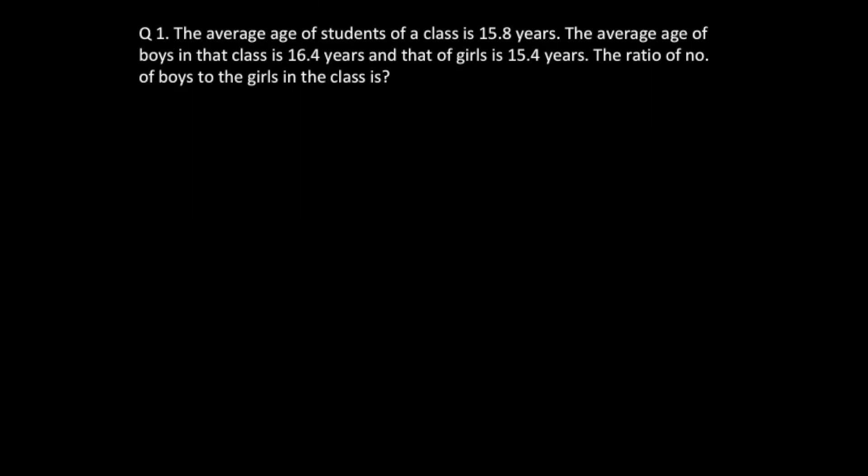In question number one, we have been given the average age of students of a class, which is 15.8 years. The average age of boys in that class is 16.4 years and that of girls is 15.4 years. The ratio of the number of boys to the girls in the class is how much?